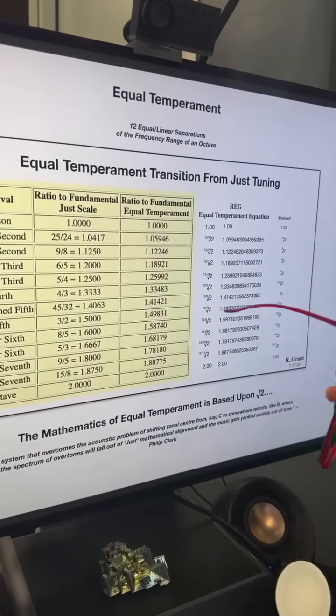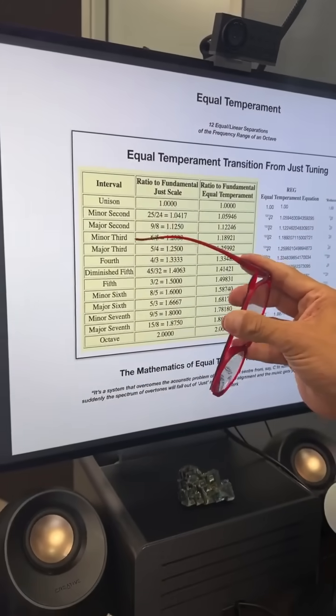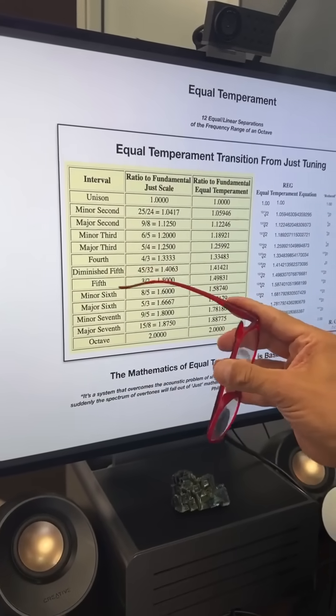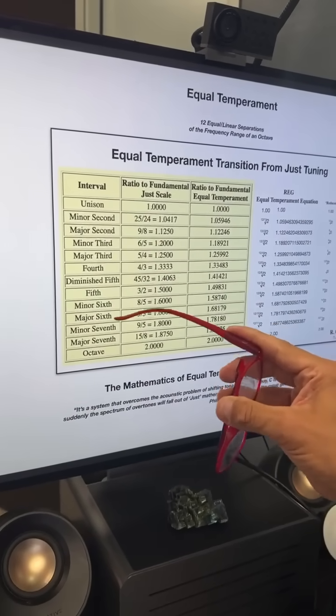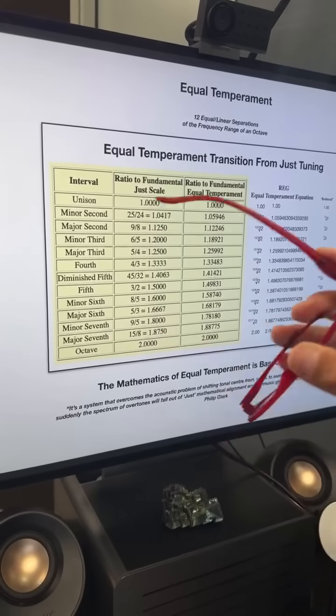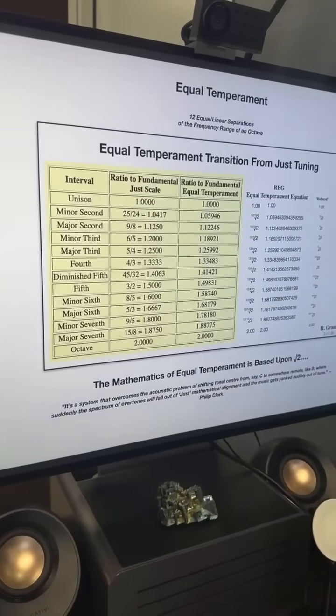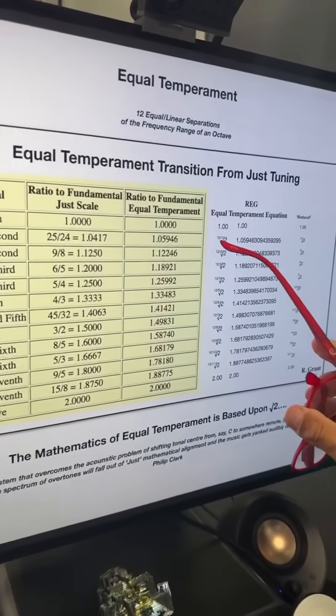Now, we can break every single note up, which includes the minor second, the major second, the minor third, the major third, the fourth, the diminished fifth, the fifth, the minor sixth, the major sixth, the minor seventh, and the major seventh, and the octave.